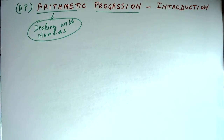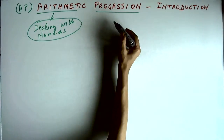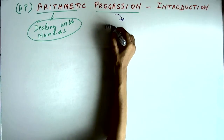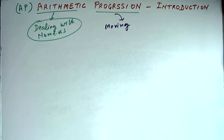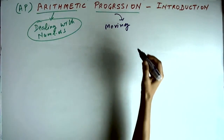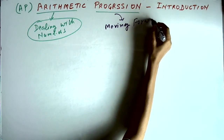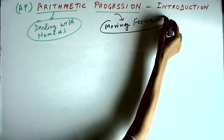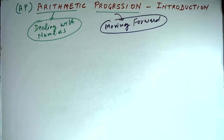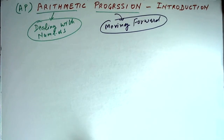Progression means something which is progressing or moving forward. Moving forward is progression — it comes from the word progress. So, arithmetic progression is basically a series of numerical terms, that is, number terms which are going forward in a pattern.